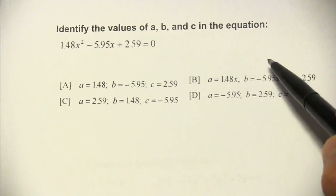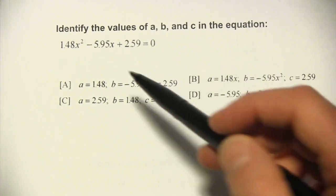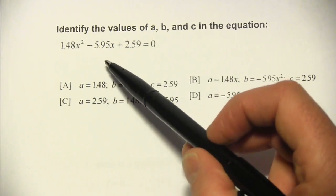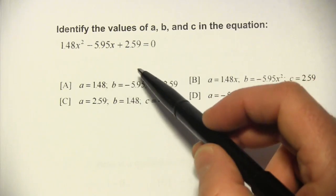Identify the values of a, b, and c in this equation: 148x squared minus 5.95x plus 2.59.